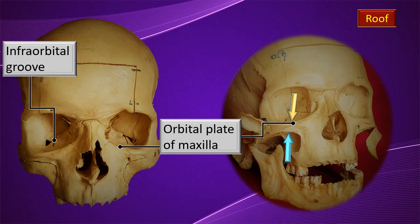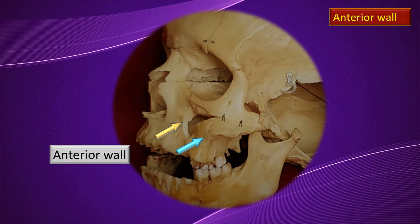One important feature of the orbital plate is the infraorbital groove, which contains the infraorbital nerve. This nerve comes forward and opens at the infraorbital foramen.